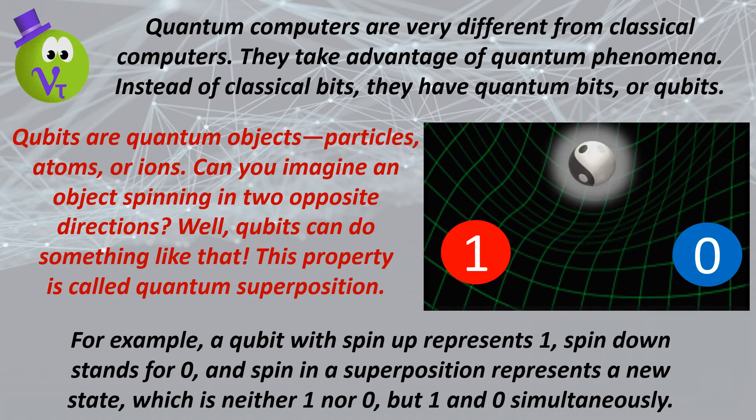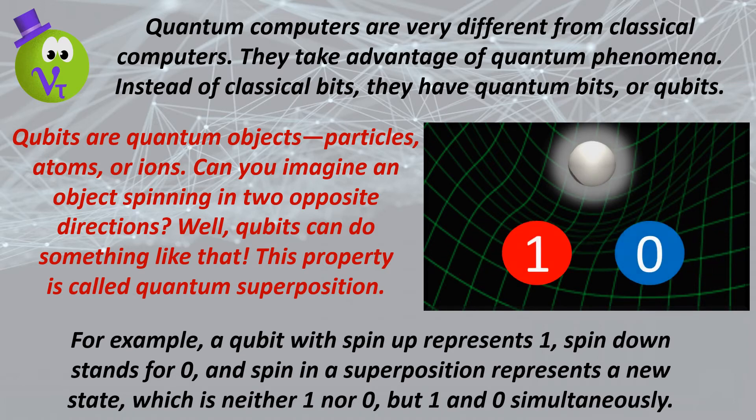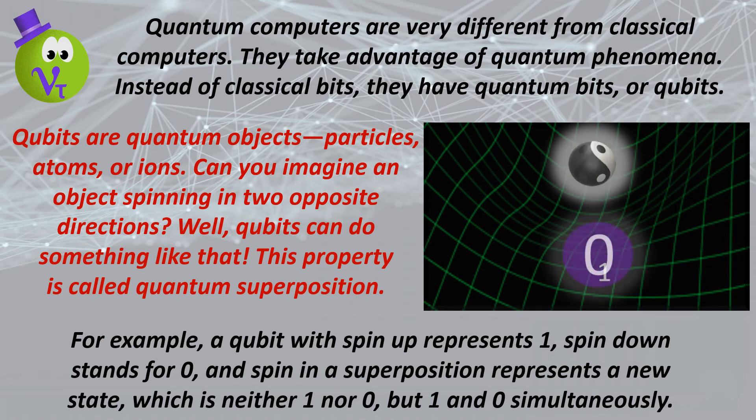For example, a qubit with spin up represents 1, spin down stands for 0, and spin in a superposition represents a new state, which is neither one nor zero, but one and zero simultaneously.